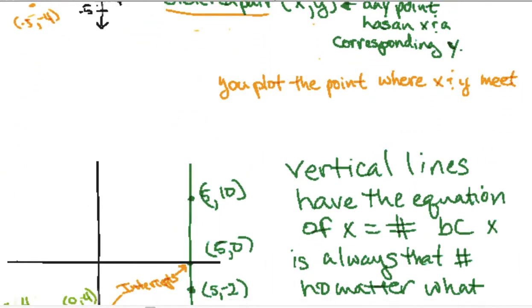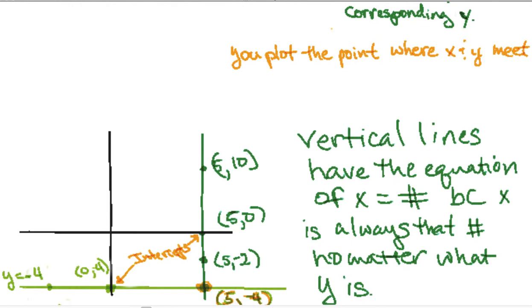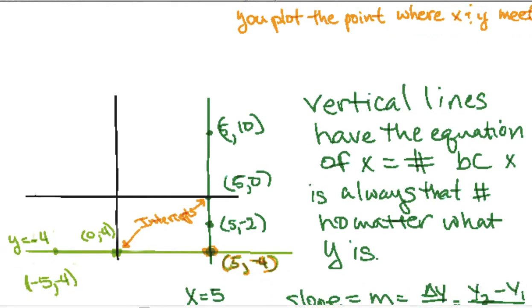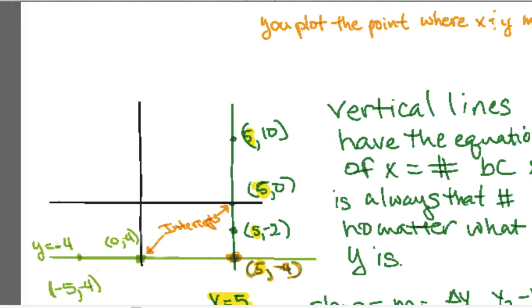Let's look at vertical lines. A vertical line has the same x value no matter what y is. X is always the same numerical value. Let's look at this vertical line of x equals five. You see how at this point five ten, five zero (this is the x intercept, that's where it touches the x axis), five negative two, or five negative four, all those values for x are five.